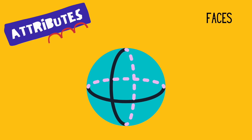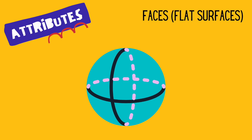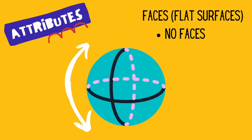Let's start by talking about the attributes of a sphere. We'll start with the faces. Remember, a face is a flat surface. Since a sphere is round and curved, it has no faces. That doesn't mean it doesn't have a surface, though — it's just one round surface.